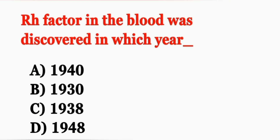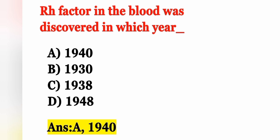Next question: RH factor in the blood was discovered in which year? Option A: 1940, Option B: 1930, Option C: 1938, Option D: 1948. The correct answer is Option A, 1940. RH factor was discovered in the year 1940 by Landsteiner and Wiener. It is also important to remember who discovered the RH factor.